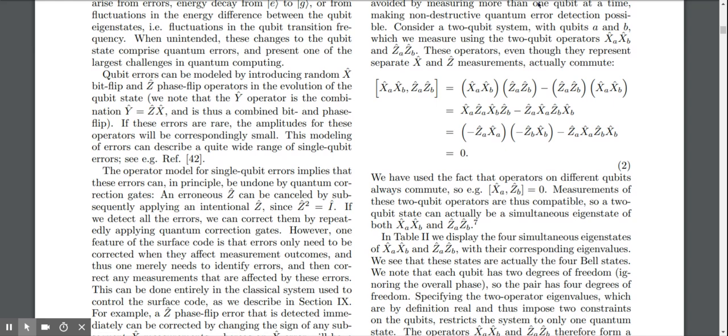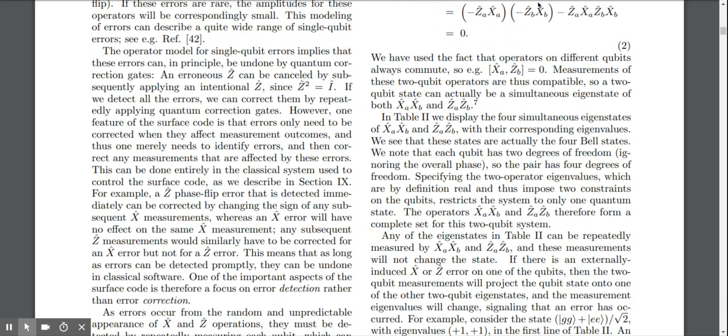Those are the error types that you're kind of mostly modeling. A qubit turning from zero to one or one to zero, or the phase being flipped.